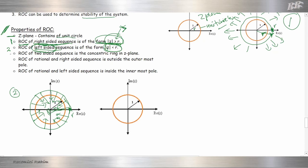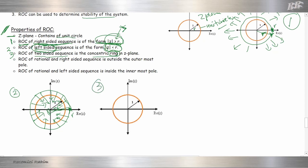For the third case: a two-sided sequence, whose ROC is a ring in the Z-plane. Let's say our function is X(N) equal to 2^N · U(N) minus 3^N · U(-N-1).